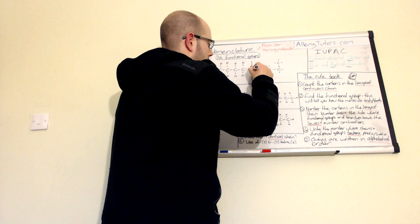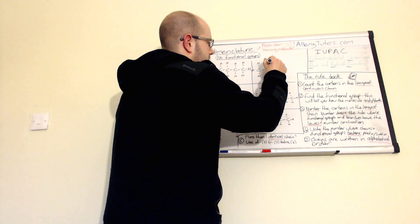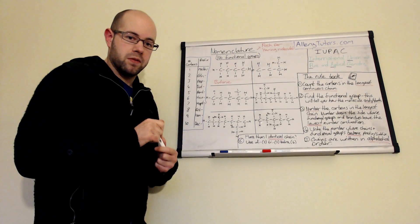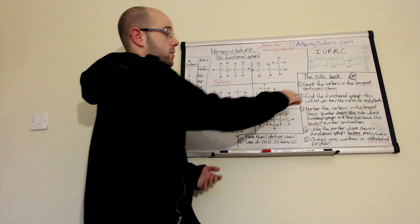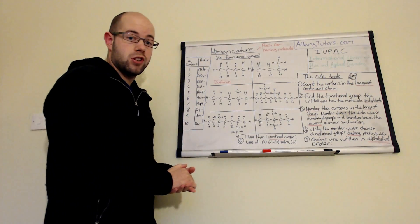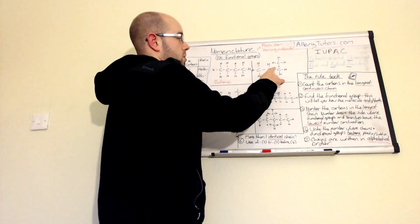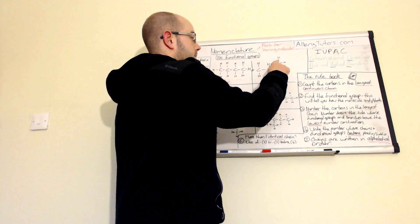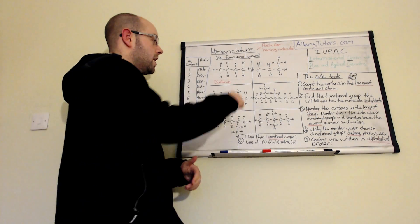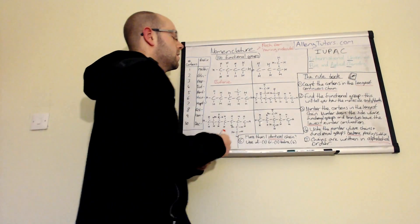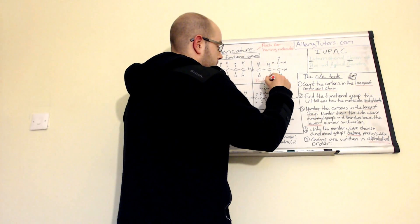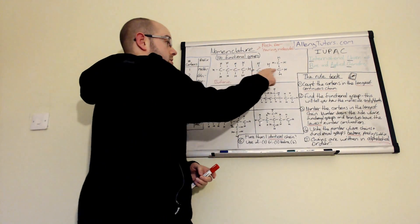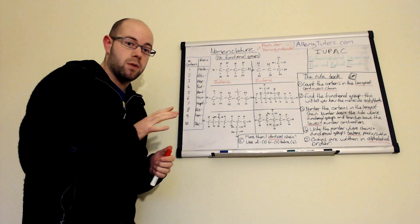The next molecule might look different to the one we've just drawn. It looks like an L-shape and you might think it must be a different molecule because it's drawn differently. But if we follow the rule and count the carbons in the longest continuous chain - the longest we can go without taking our finger off or going backwards - it's one, two, three, four. That's exactly the same as the first one. So we call that one butane as well. Don't fall into the trap of thinking a molecule is different just because it looks visually different.